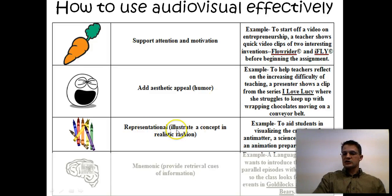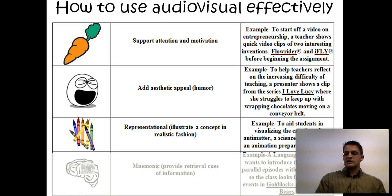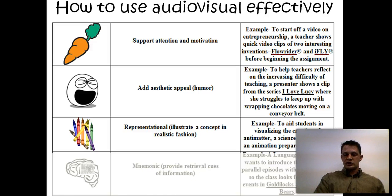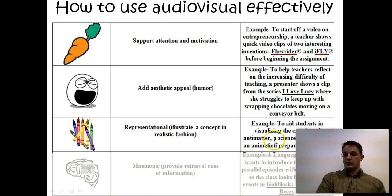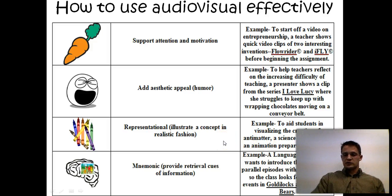How about representational use — to illustrate a concept in a realistic fashion? When we have to teach students about splitting atoms or the creation of antimatter, what better way than a realistic video clip or animation — something actually designed by CERN, for example. We'll show you some examples of that later when we get to the Rube Goldberg machines.